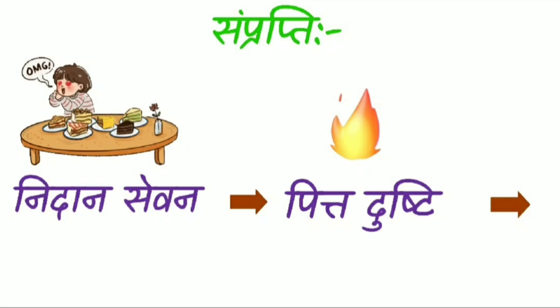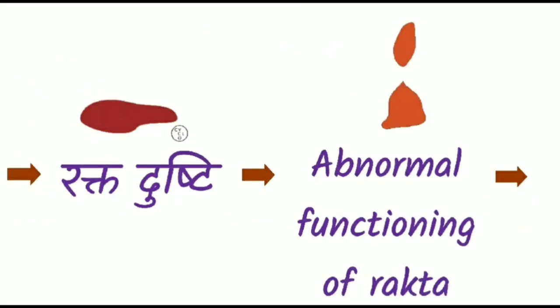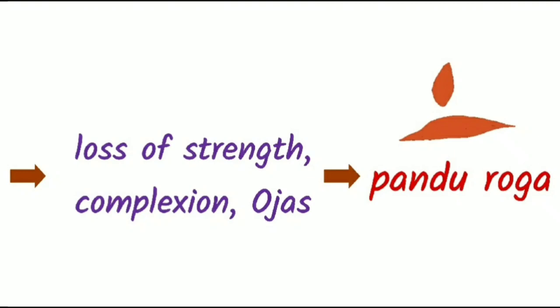Due to Nidana Sevana, Pitta gets vitiated. This vitiated Pitta then vitiates Rakta. As Rakta is vitiated, it functions abnormally. Due to this, the person loses strength, complexion, and Ojas, hence causing Panduruga.